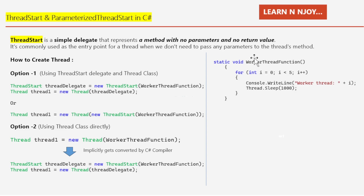This WorkerThreadFunction uses a for loop to iterate five times, printing 'Worker Thread' concatenated with the current value of i to the console. Then it makes the thread sleep for 1000 milliseconds. Once we create the ThreadStart delegate object, we create a Thread object: Thread thread1 = new Thread(threadDelegate), passing the delegate object into the Thread constructor.